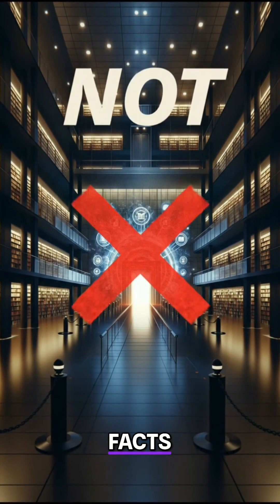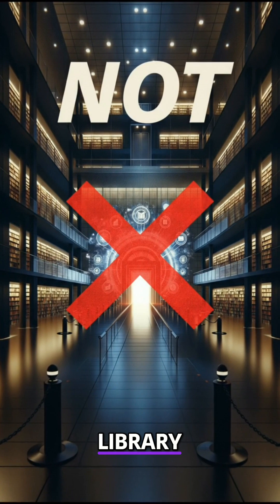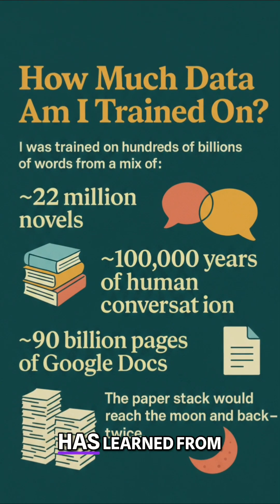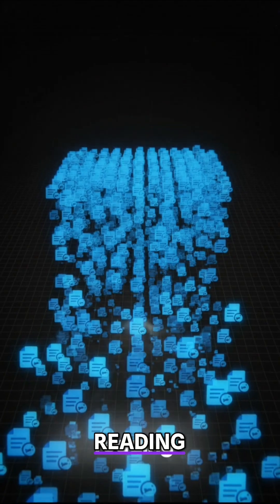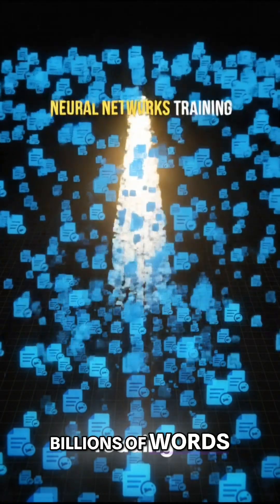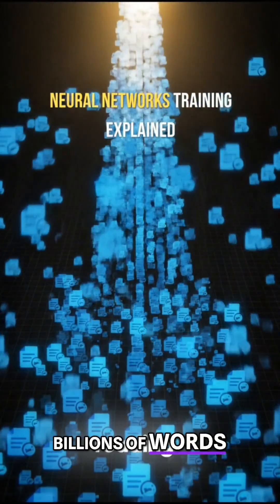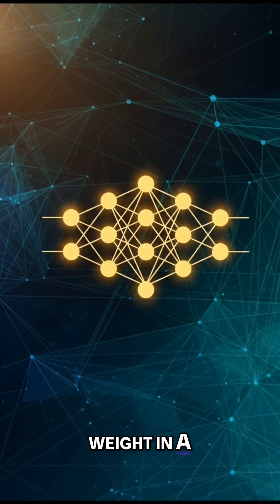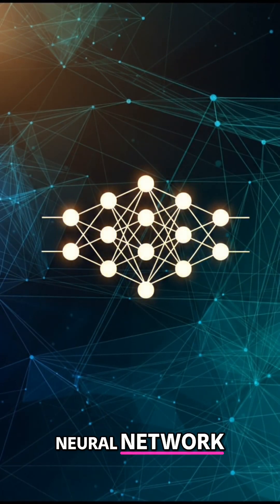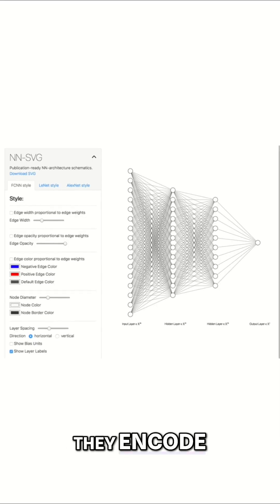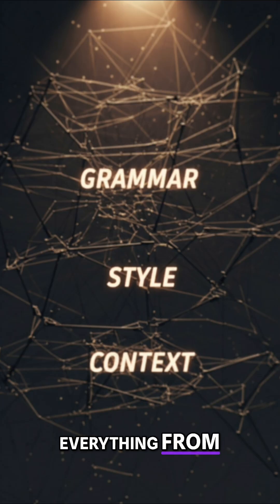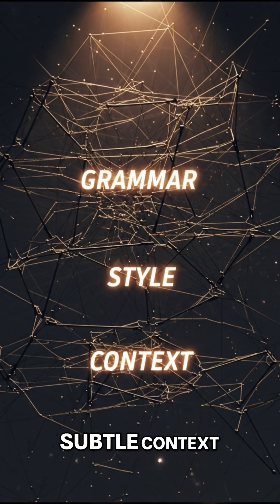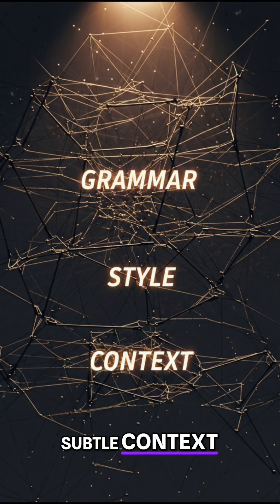But these aren't facts stored like a library. They're patterns the model has learned from reading billions of words. Every parameter is a weight in a neural network, and together they encode everything from grammar to style to subtle context.